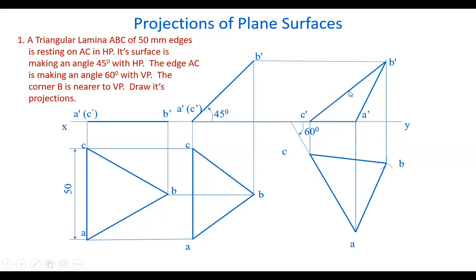This is the final front view and this is the final top view, satisfying all the given conditions: surface angle with HP, edge angle with VP, corner B nearer to VP, and AC in the horizontal plane. AC edge is in the horizontal plane itself. So satisfying all conditions, we have drawn this.